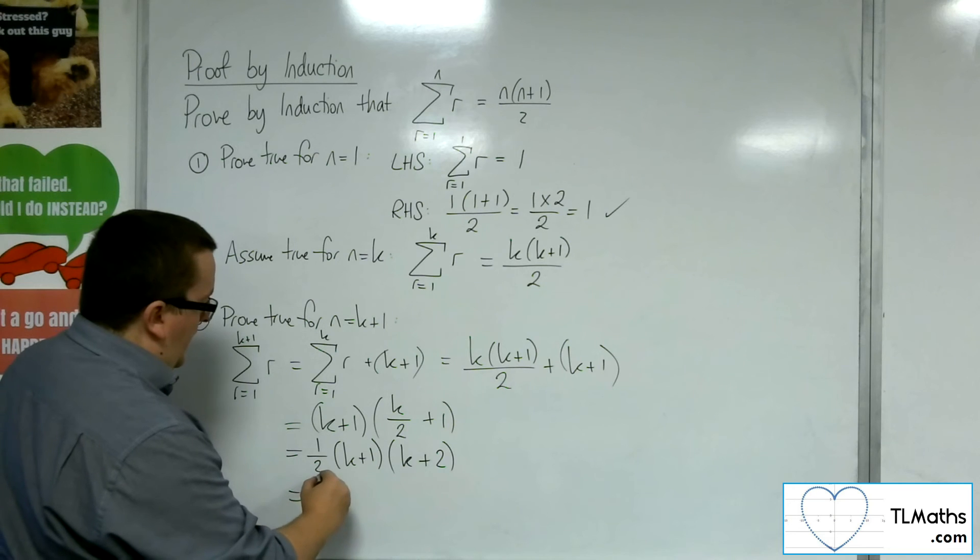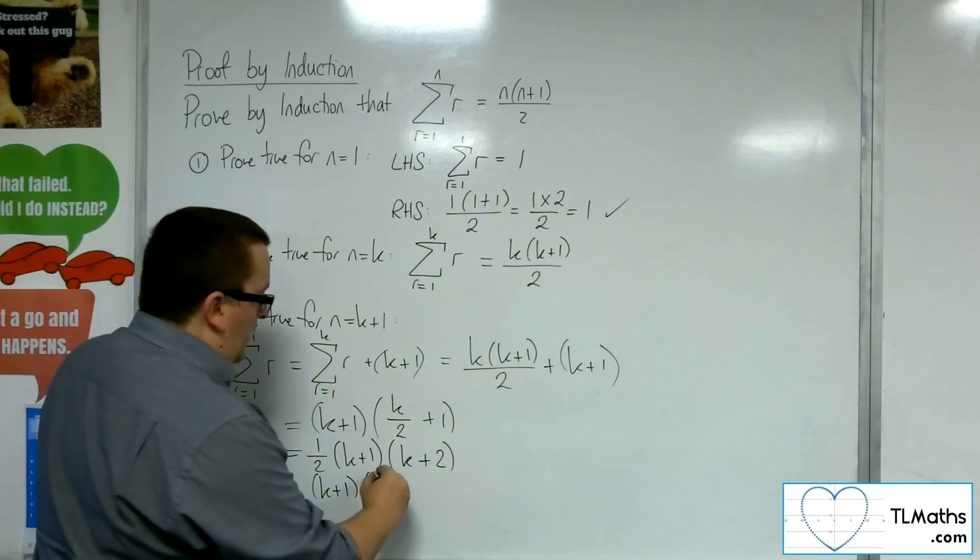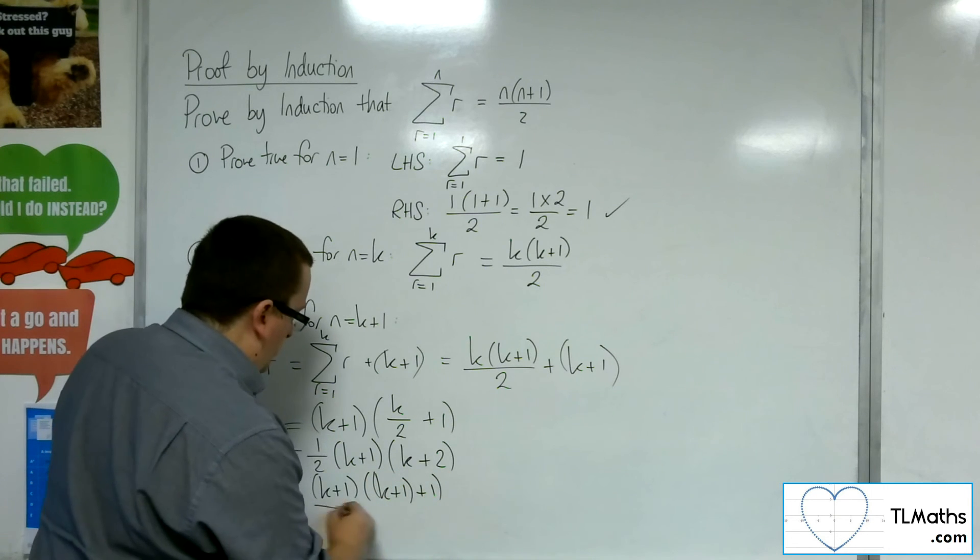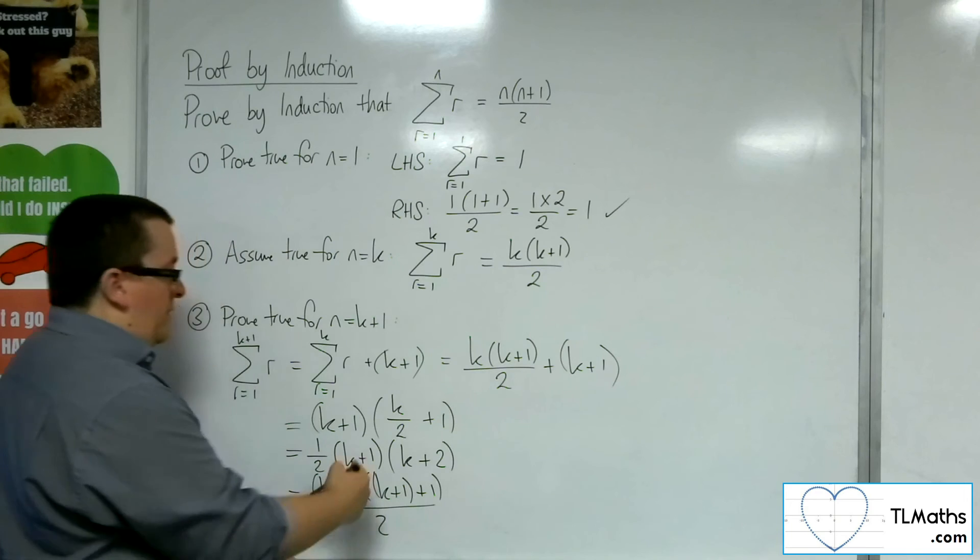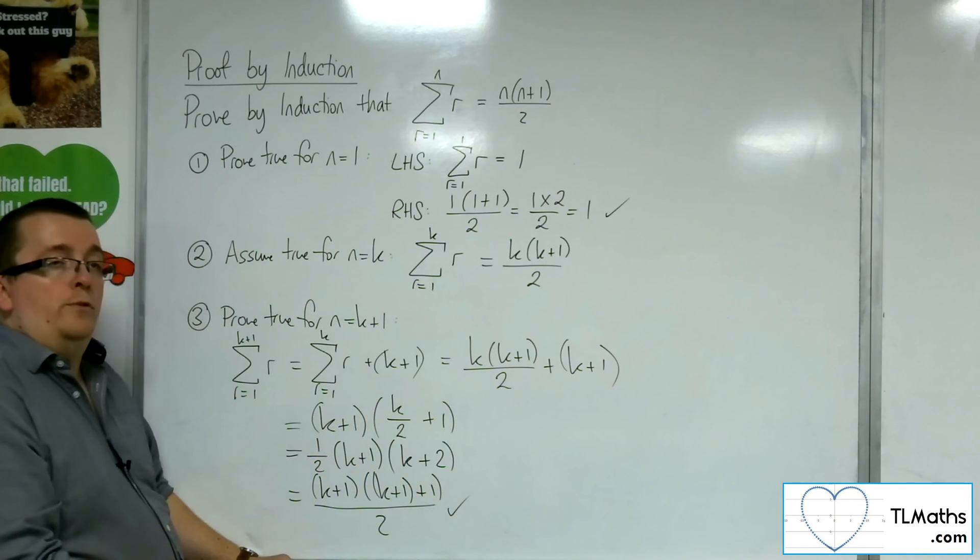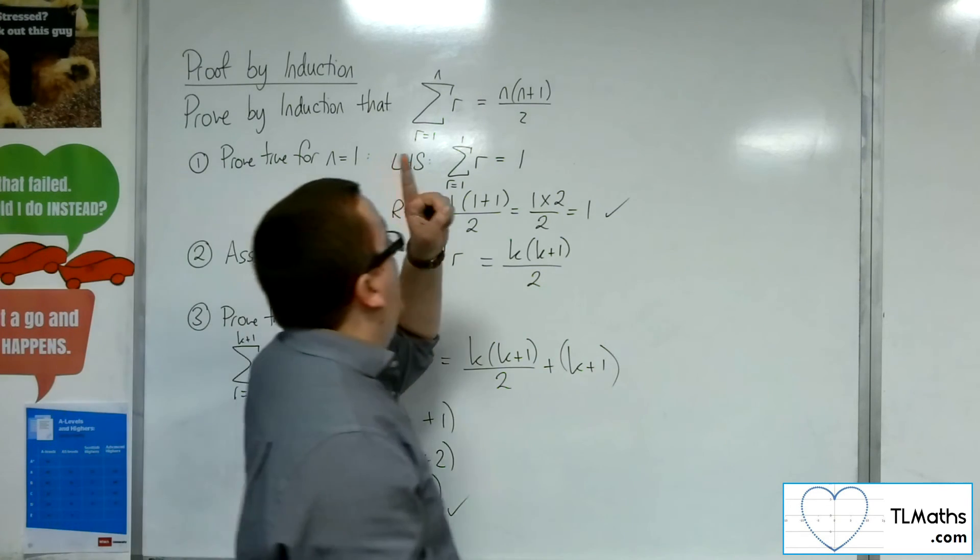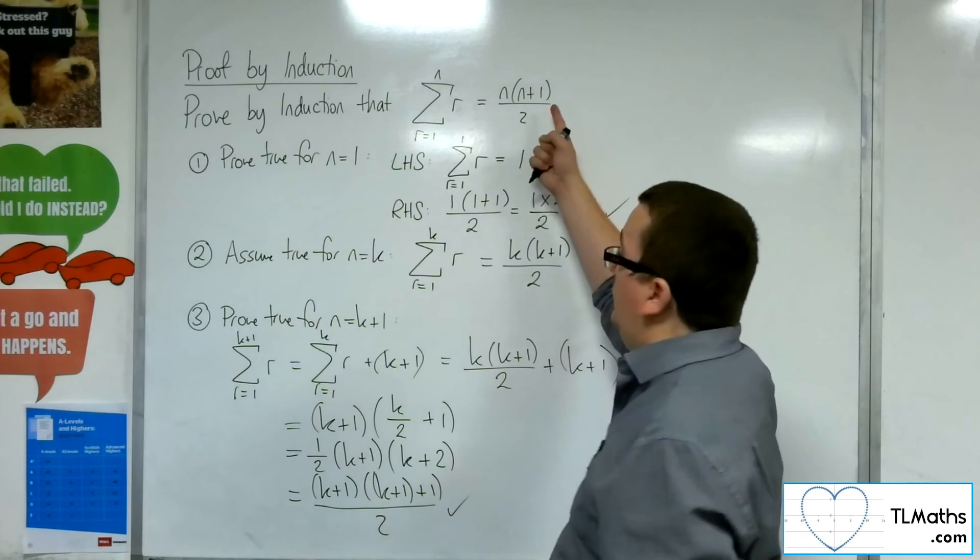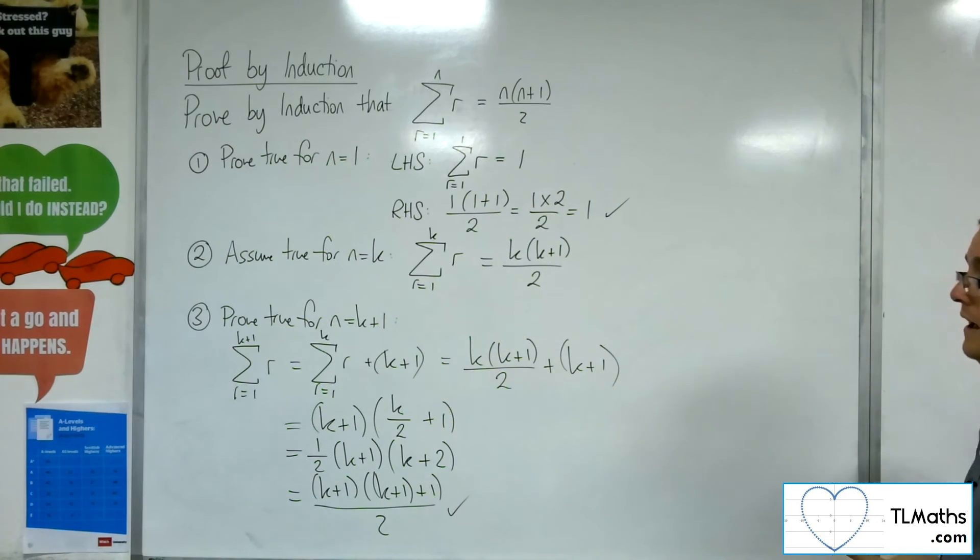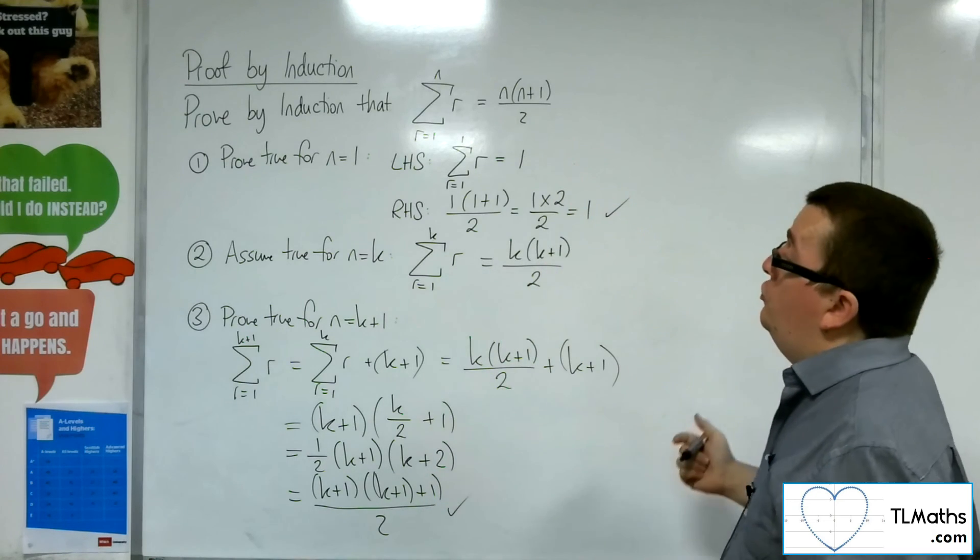And so I've got the k plus 1 times the k plus 1 plus 1, the k plus 2, all over 2. These two are the same thing. And so we've proved that it is true for n equals k plus 1. Because we've arrived at exactly the same thing where n is k plus 1 up here. So that does it. We have now proved by induction that that is true.